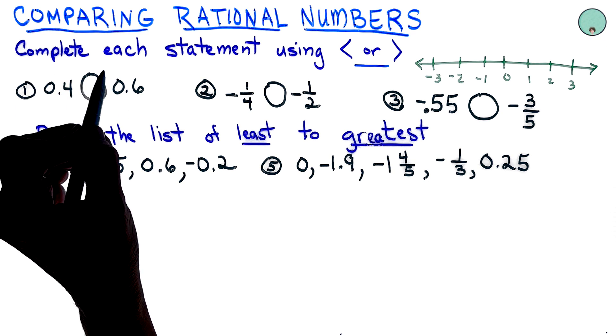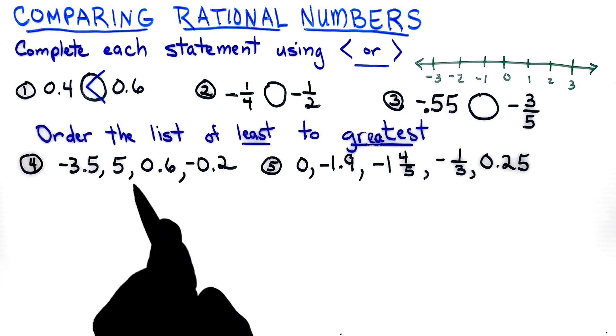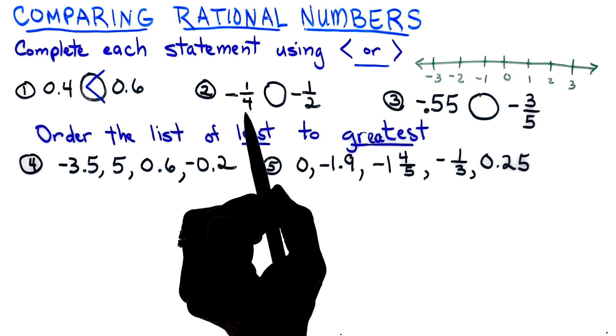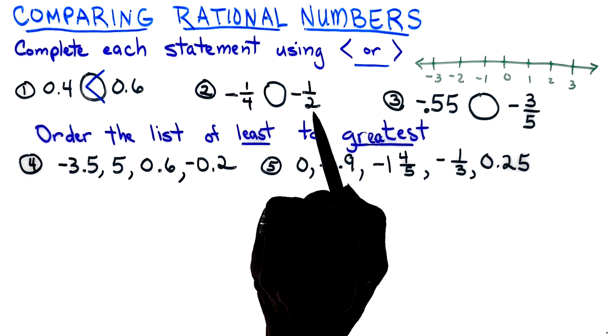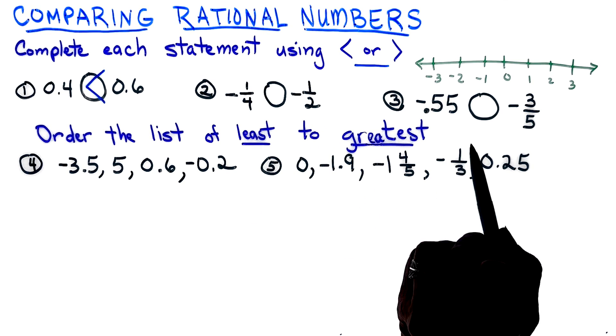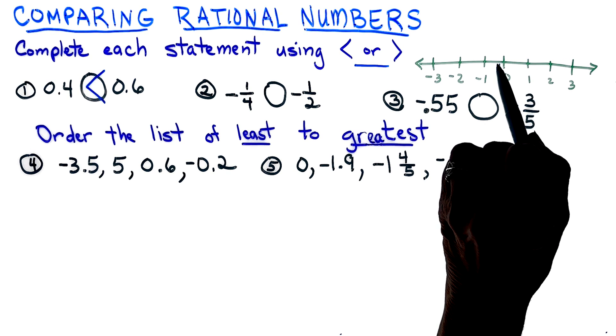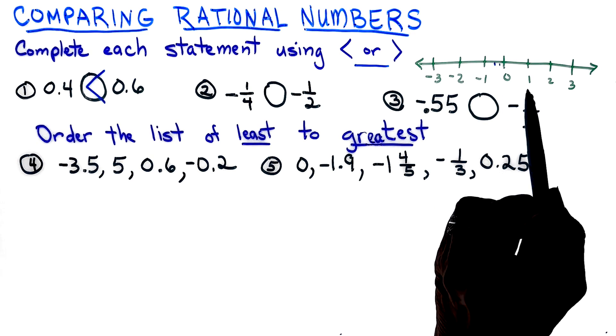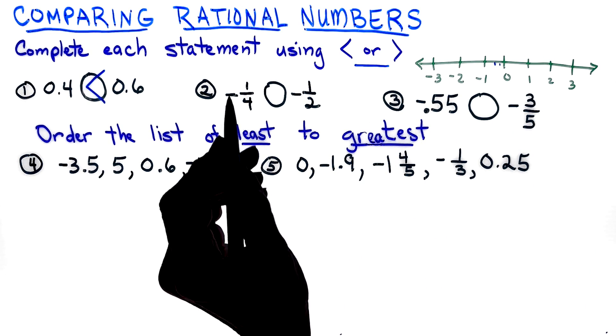Looking at number two, we have two negatives here. I see that I have negative one-fourth and negative one-half. On the number line, negative one-fourth might be right there and negative one-half is just a little bit more to the left. You can see that negative one-fourth is closer to the zero, so we know that negative one-fourth is greater than negative one-half.